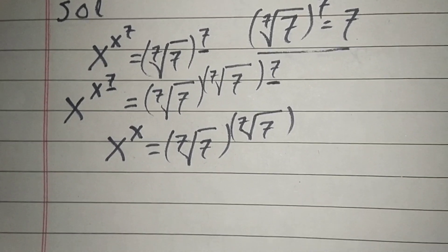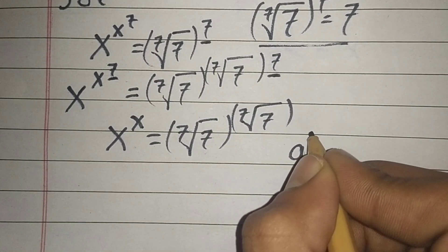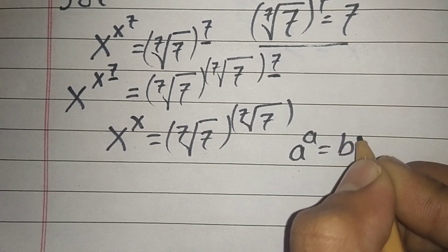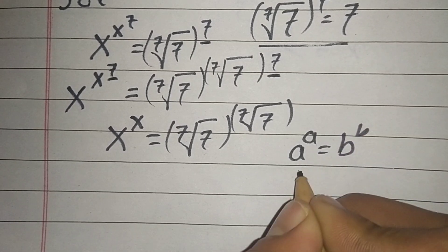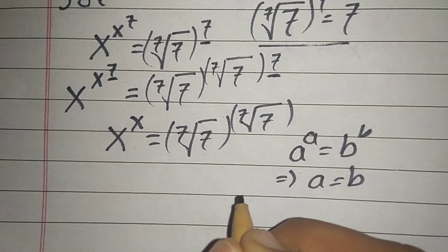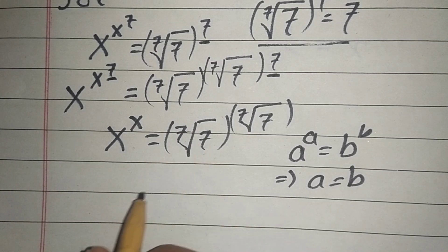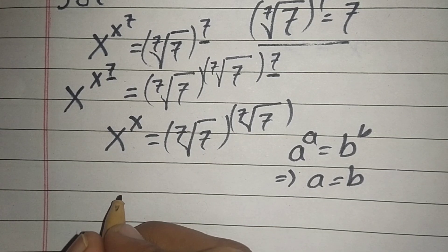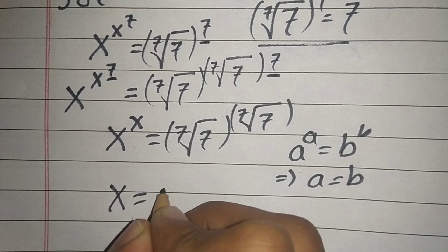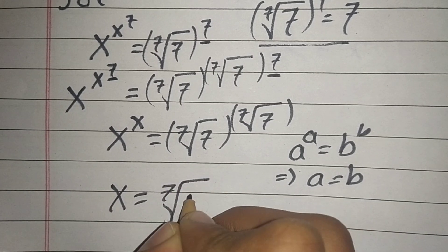We have the property that if a^a = b^b, then a = b. Applying this property here, we can write x = 7^(1/7), which is the seventh root of 7.